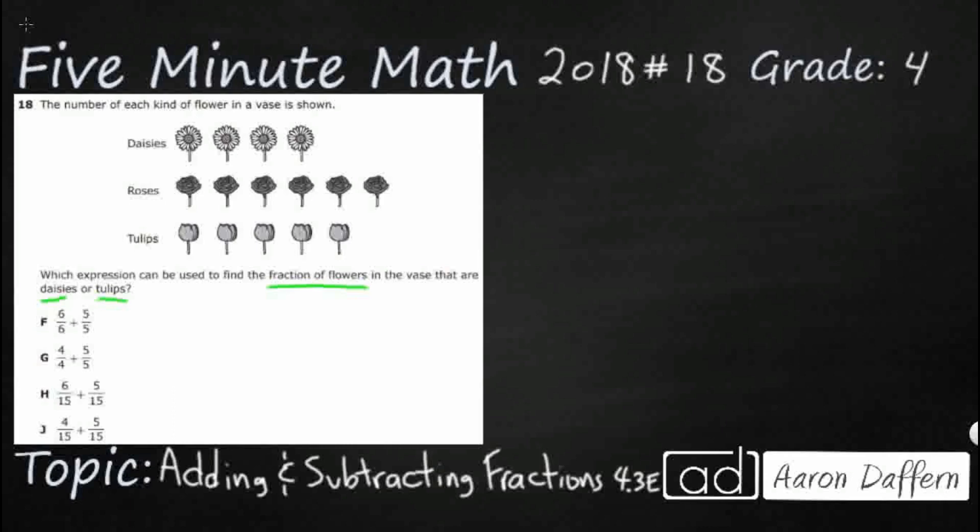So our answer here needs to be a fraction. We don't even need to find the answer. We need to know how to express the answer in an addition problem here. So we have our daisies all laid out here and it might seem pretty simple like a pictograph we'd see in kindergarten. We've got four daisies, we've got six roses, and we've got five tulips, but that doesn't really help us.